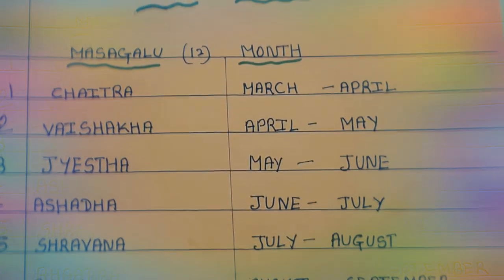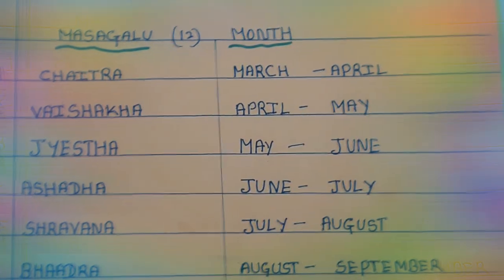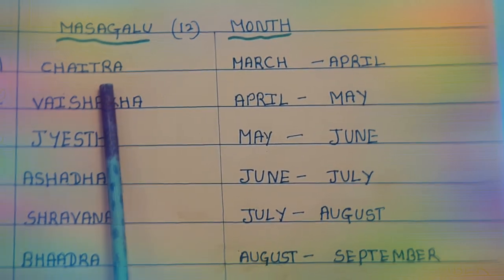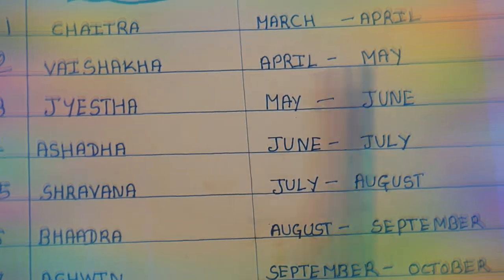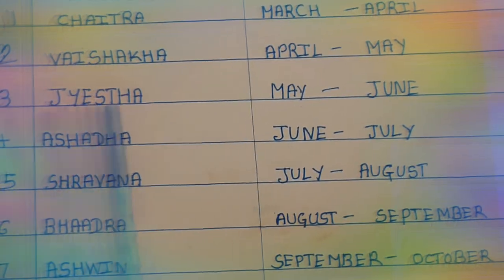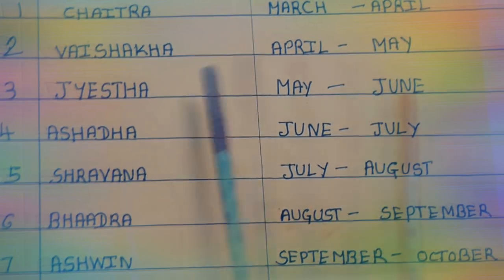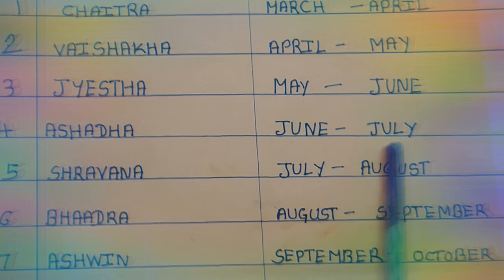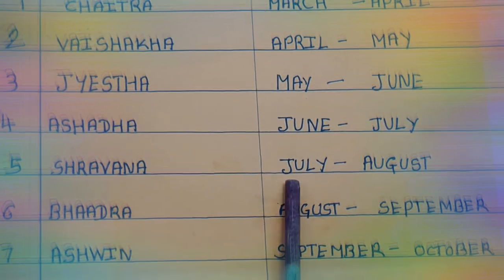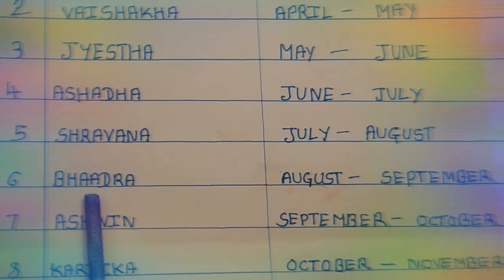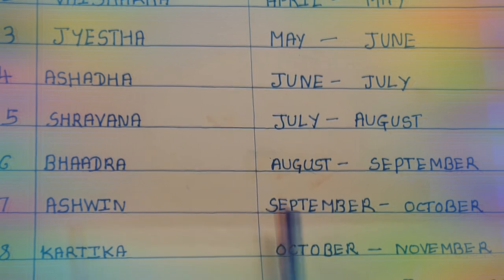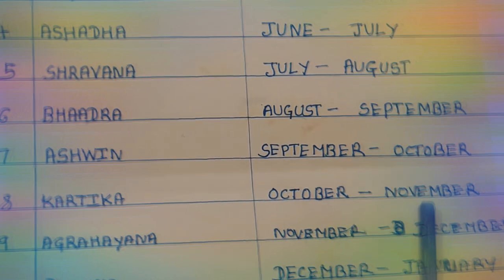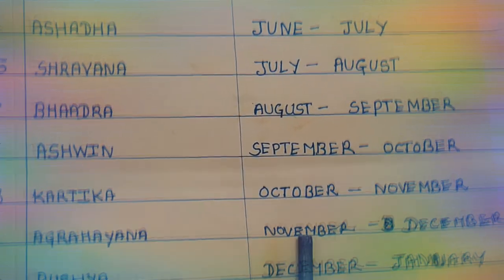Shaka Calendar Masagalu: 12 Months. Chaitra: March to April. Vaishaka: April to May. Jaishta: May to June. Ashada: June to July. Shravana: July to August. Bhadra: August to September. Ashwin: September to October. Karthik: October to November. Agrayana: November to December.